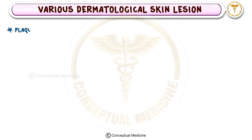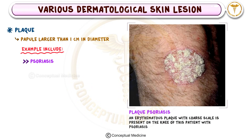When a papule grows larger than one centimeter, it's referred to as a plaque. Plaques are commonly associated with psoriasis, which presents as silvery, scaly lesions.